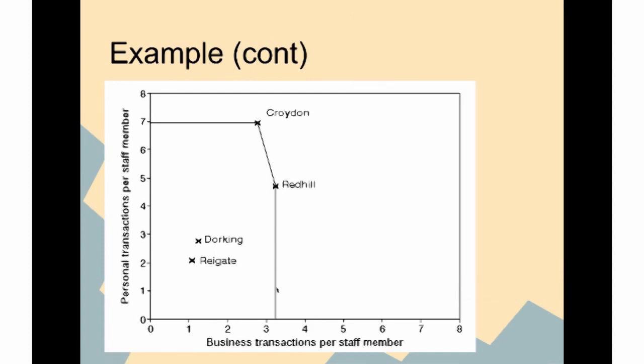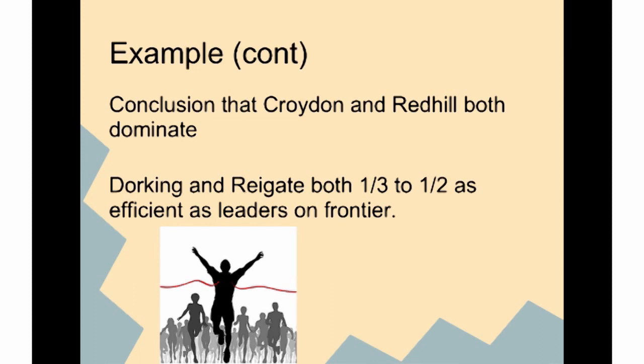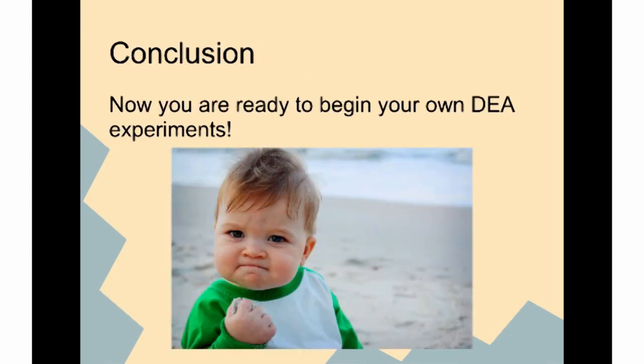That concludes our Croydon and Redhill example. Now you are ready to begin your own DEA experiments.